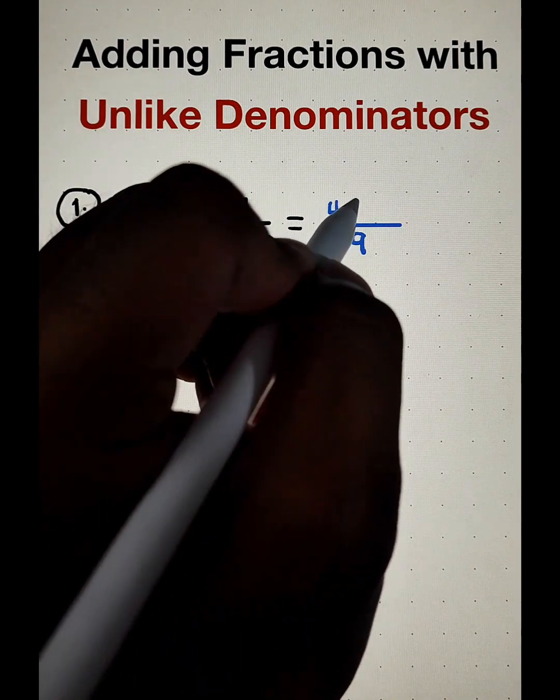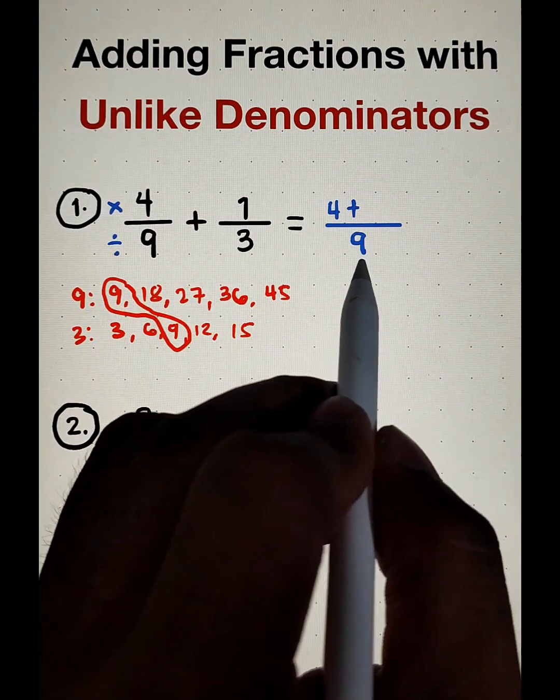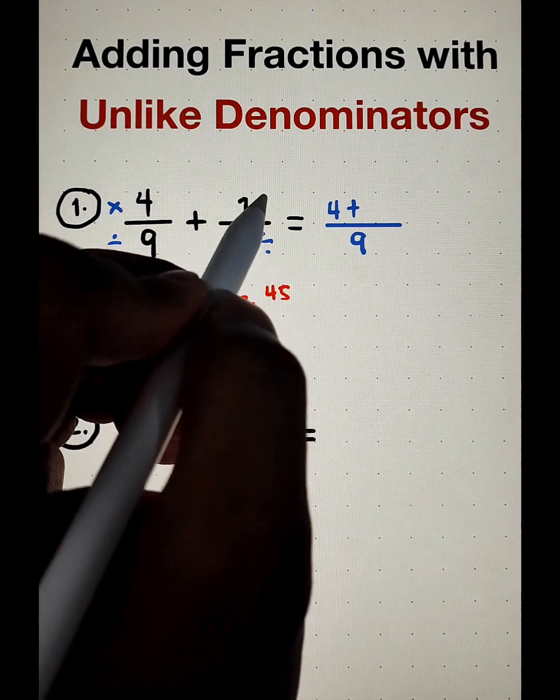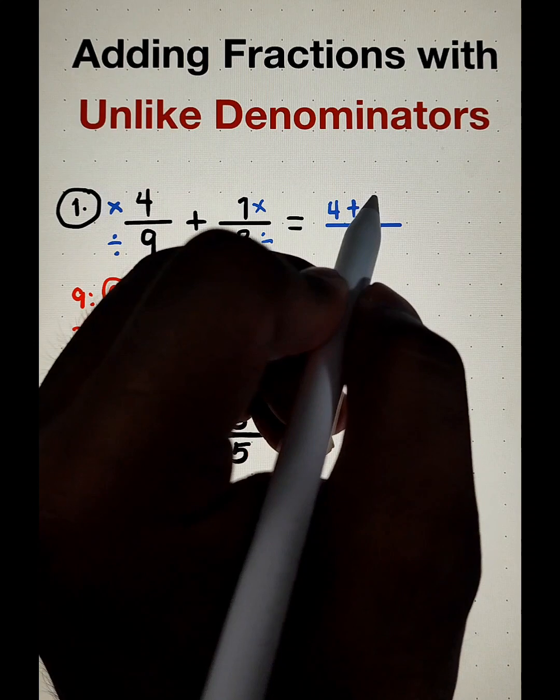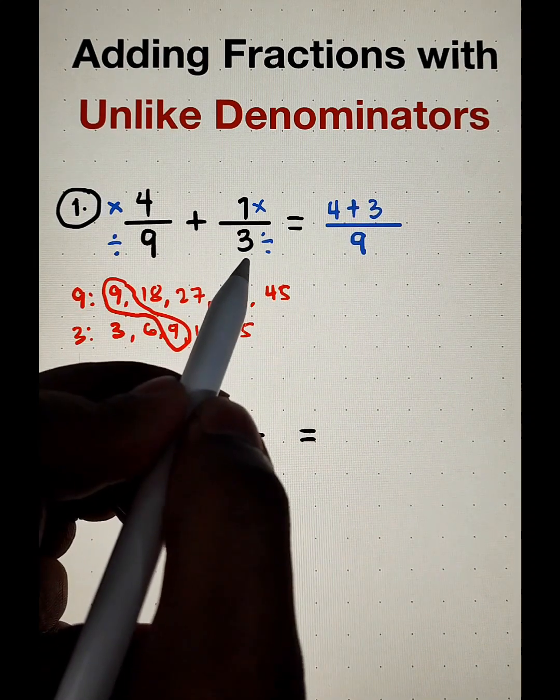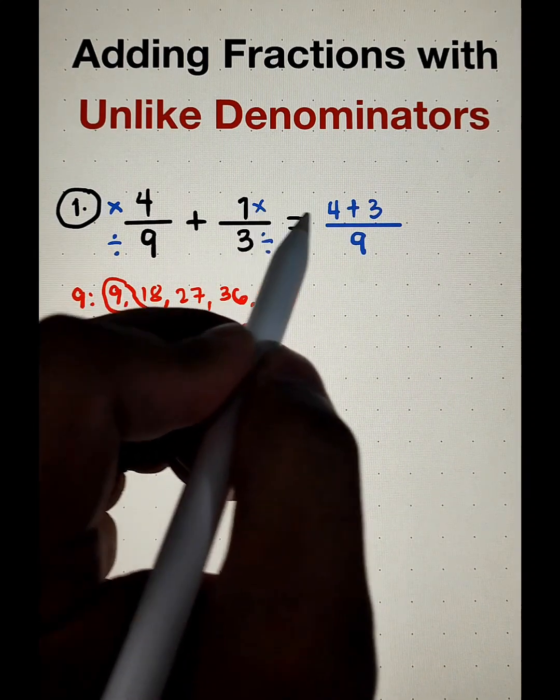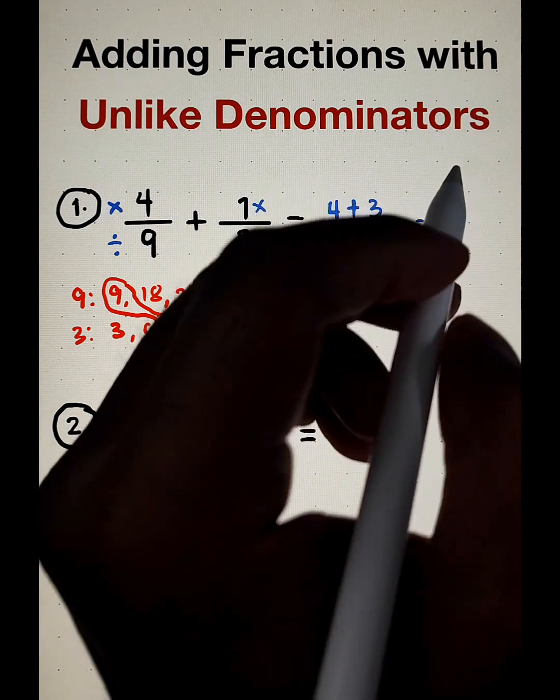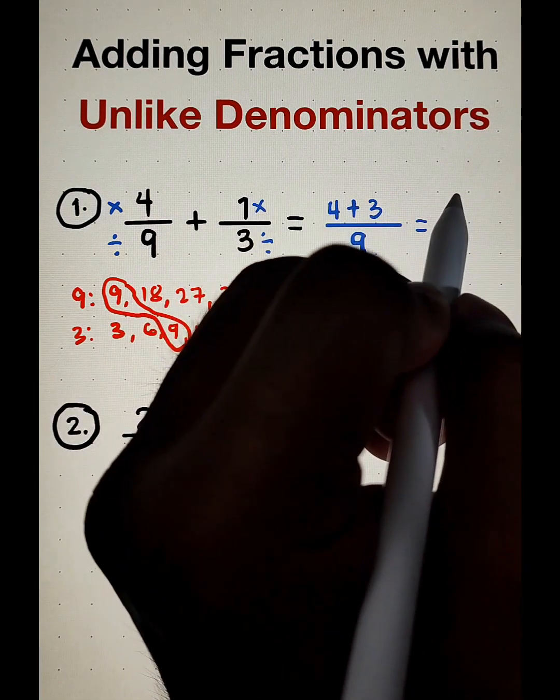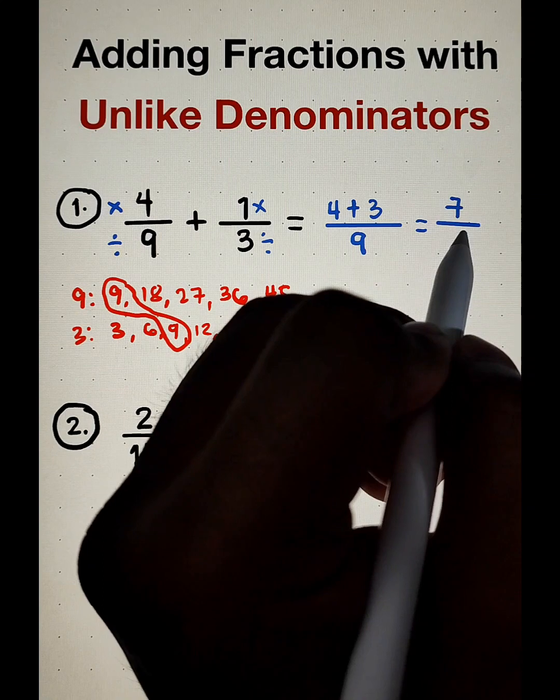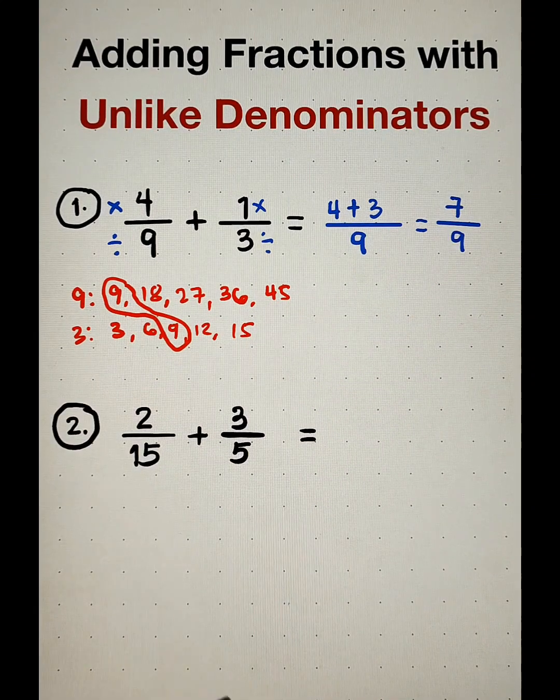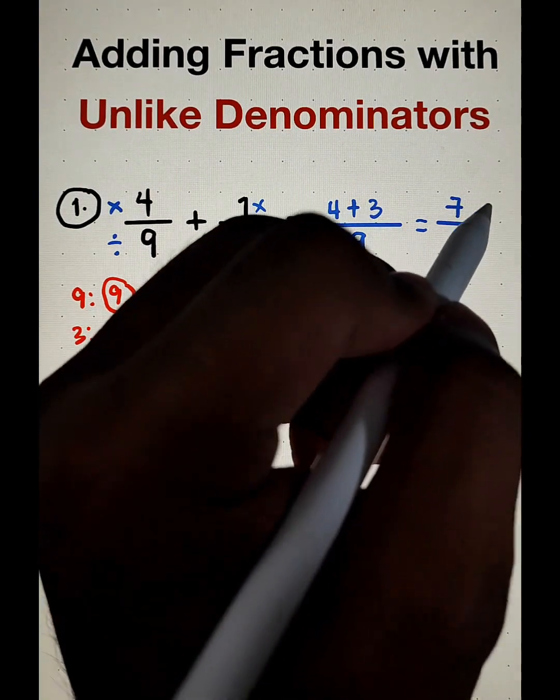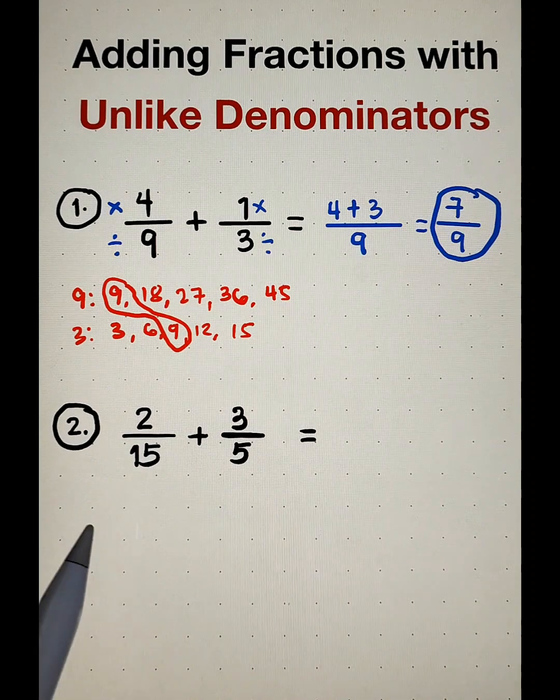And then copy this operation plus. Next, 9 divided by 3 is equal to 3 times 1. That is equal to 3. And after that, you need to add the numerator, which is 4 plus 3, which is 7, over 9. And after that, you need to secure whether your answer is already in simplified form. In this case, 7 over 9 is already in simplified form.